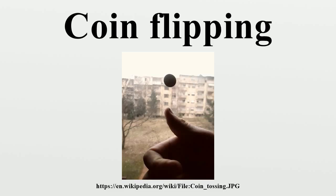Coin flipping is used to decide which end of the field the teams will play to and which team gets first use of the ball in football matches, American football games, Australian rules football, volleyball, and other sports. In the U.S., a specially minted coin is flipped in National Football League games and then sent to the Pro Football Hall of Fame. The XFL, a short-lived American football league, attempted to avoid coin tosses by implementing a face-off-style opening scramble, but because of the high rate of injury in these events, it has not achieved mainstream popularity and coin tossing remains the method of choice in American football.